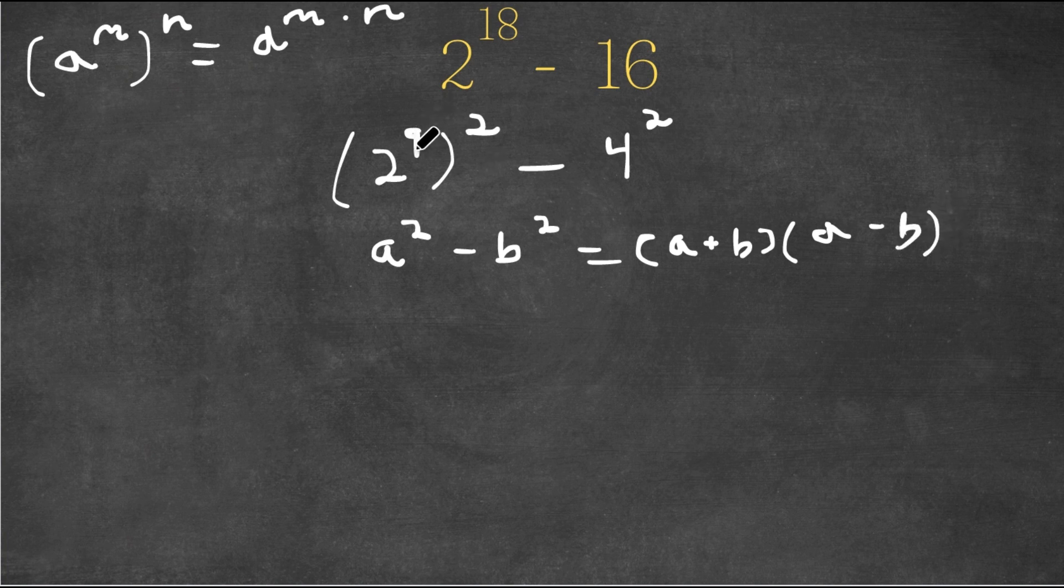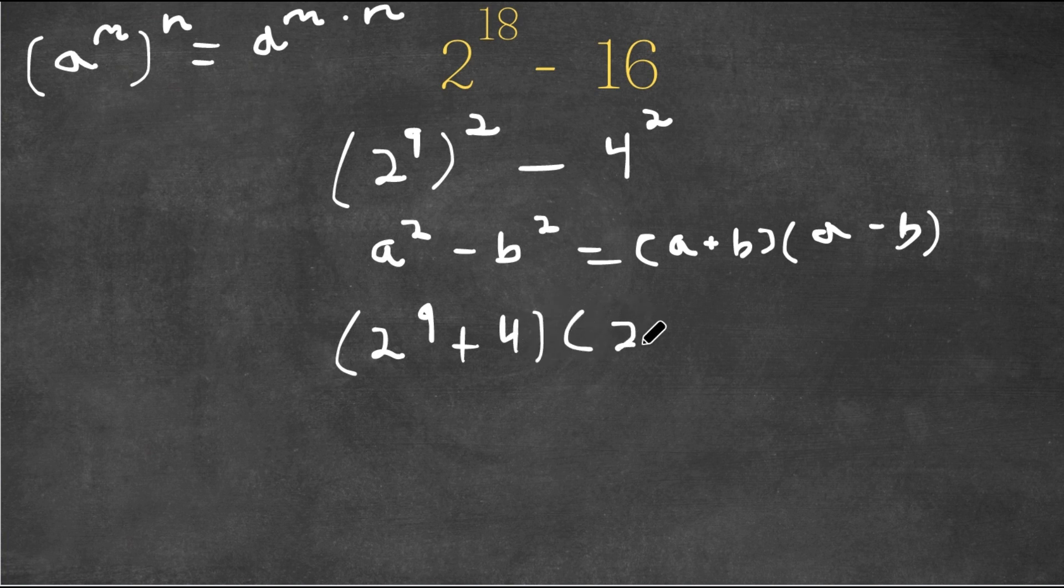So in this case, we can think of 2 to the power of 9 as A and 4 as B. So I'm going to rewrite this as 2 to the power of 9 plus 4 times 2 to the power of 9 minus 4.